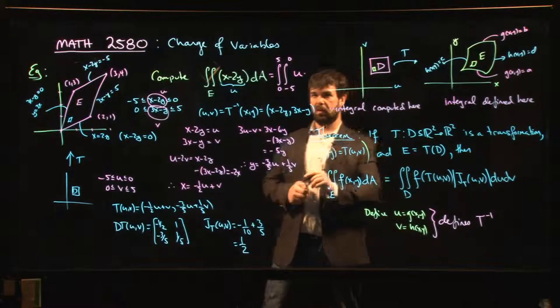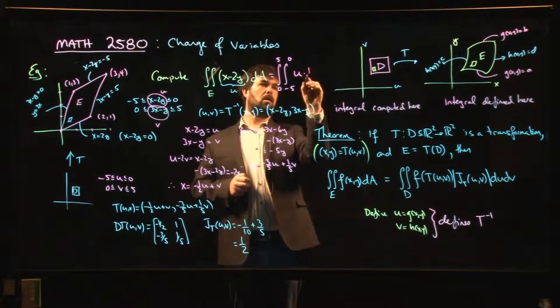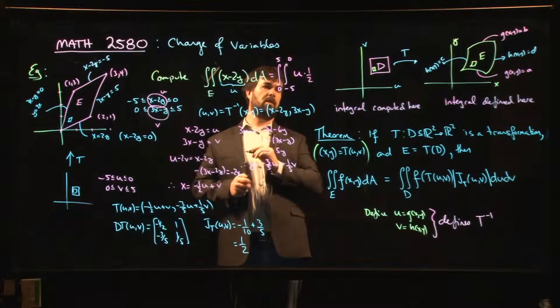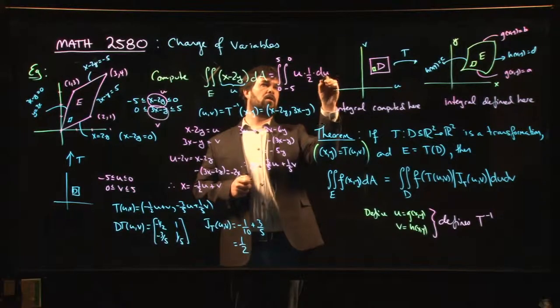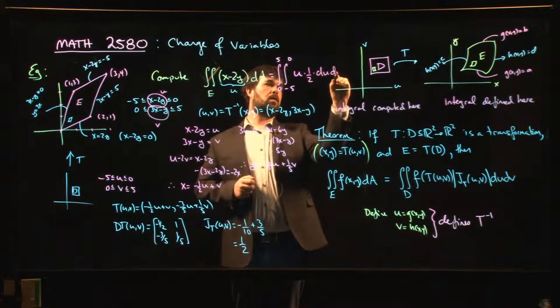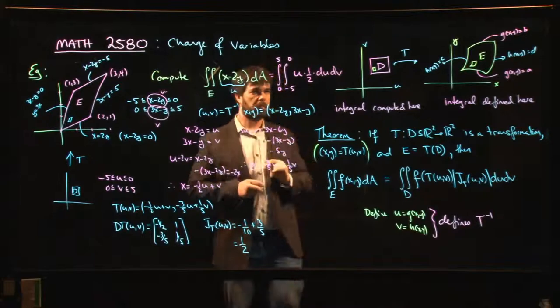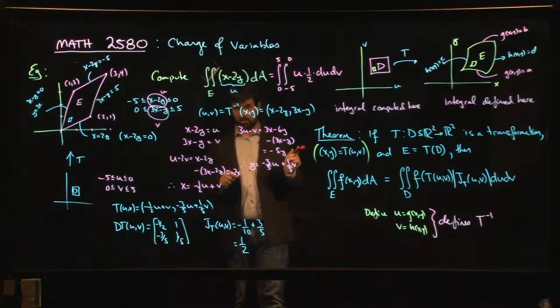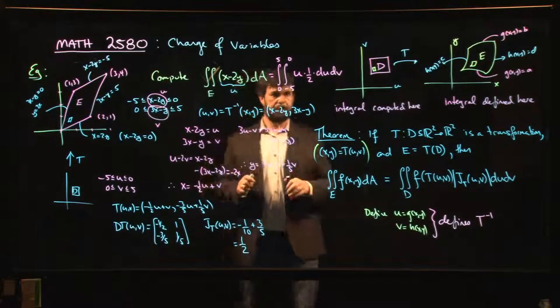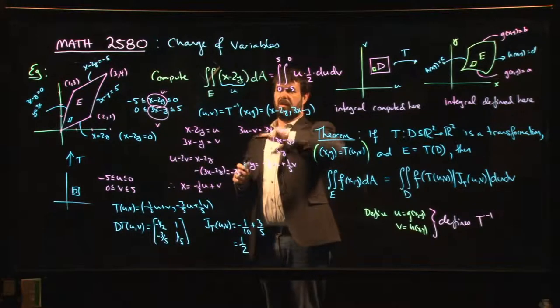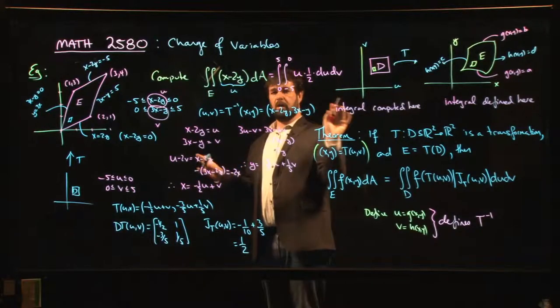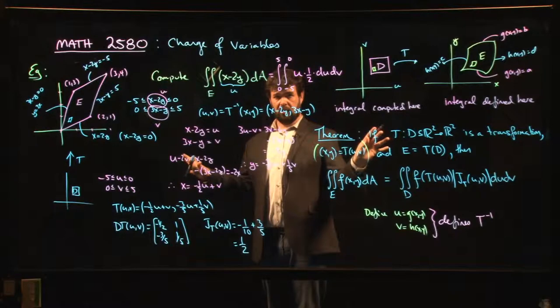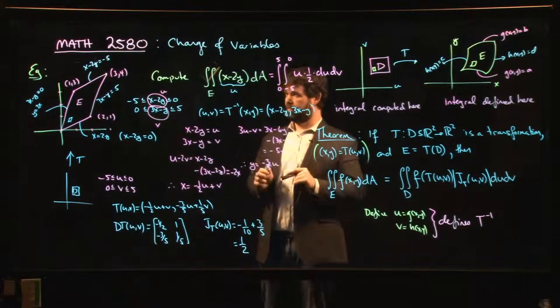So u is this part. F of T of u, v is u. Now I have to put in my Jacobian. It's already positive, don't need to worry about the absolute value, so times 1/5, and then du dv. That integral is a piece of cake. Maybe you can almost do it in your head. I'm not going to try to do it in my head, but maybe you could. It's doable. Not so bad. It's a pretty simple function, you're integrating over a rectangle. I think I can let you all finish it off from here.